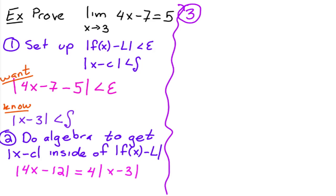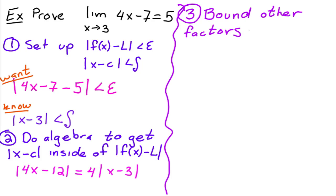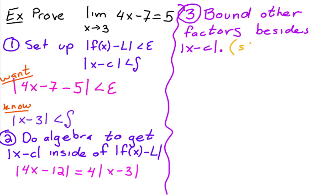Step three is only necessary if you don't have a constant times your x minus c. In this case, we do have a constant times x minus c, so we skip step three. But if we had other variables instead of just a constant, we would need to bound those other factors besides x minus c. We'll take that into account in the next example. Here, this is the simplest case, so we skip it — this will be clearer when we do the harder problems.